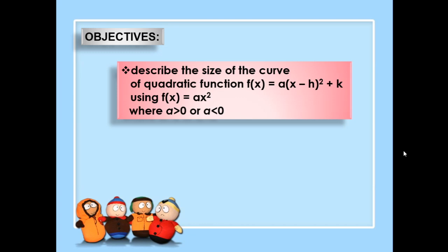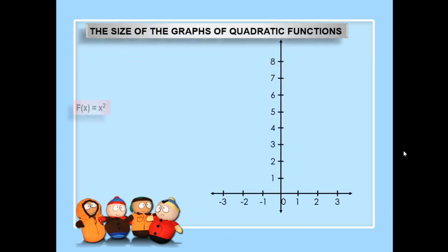Our objective is to describe the size of the curve of a quadratic function defined by a times the square of the difference of x and h plus k, using the function f(x) equals ax squared, where a is greater than 0 or a is less than 0.